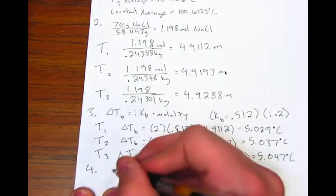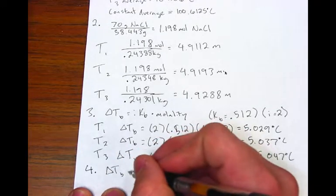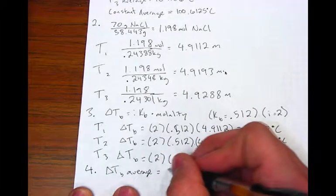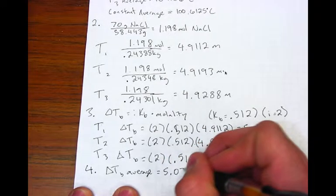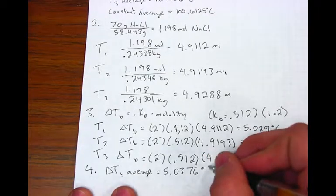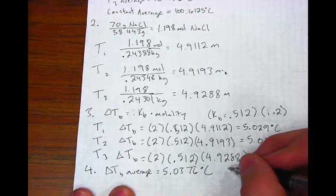Next, you should average the three results for the TB of the water, excluding any outliers. Make sure to write the average value in your data analysis table. The average is 5.0376 repeating degrees Celsius.